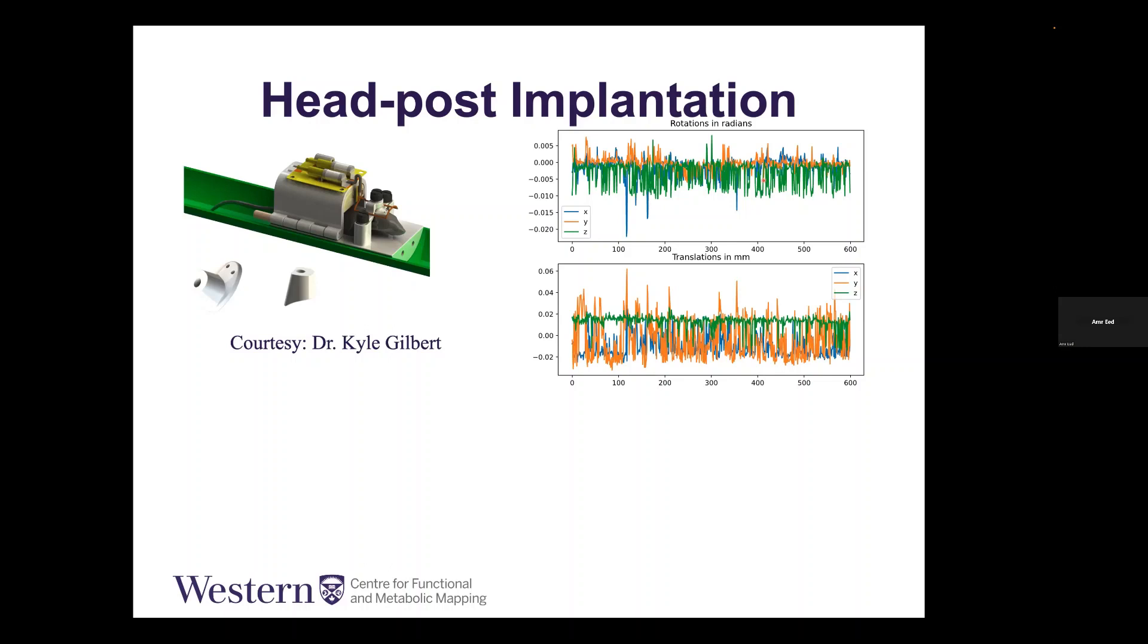The motion is pretty similar. We have the motion well under one voxel. You can see the rotation on top and the translations at the bottom. It's very minimal and the head of the animal almost doesn't move at all.